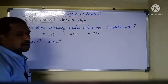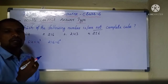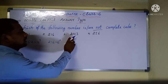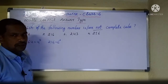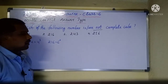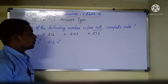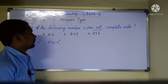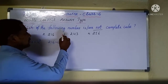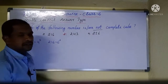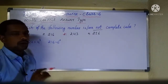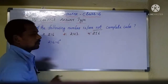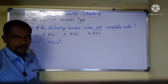Coming to 243 — checking 1 to 15 cube values, there is no 243, so this is going to be one of our correct answers. And 256 is also not going to be a perfect cube.